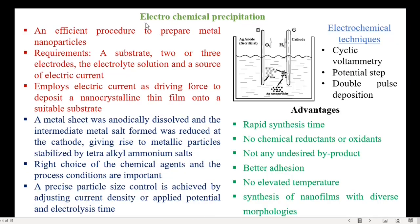The next method is called the electrochemical precipitation technique. It is an efficient procedure to prepare metal nanoparticles. The requirements are a substrate, two or three electrodes, the electrolyte solution, and a source of electric current. In the actual process, it employs electric current as a driving force to deposit a nanocrystalline thin film onto a suitable substrate. A metal sheet is anodically dissolved, and the intermediate metal salt formed is reduced at the cathode, giving rise to metallic nanoparticles stabilized by tetra-alkyl ammonium salts. The important factors to be considered are the right choice of chemical agents and the process conditions.